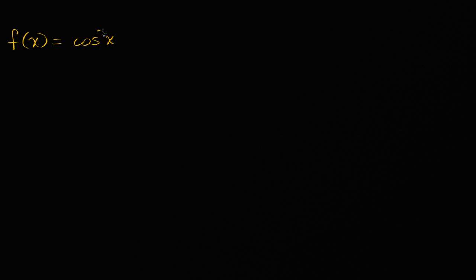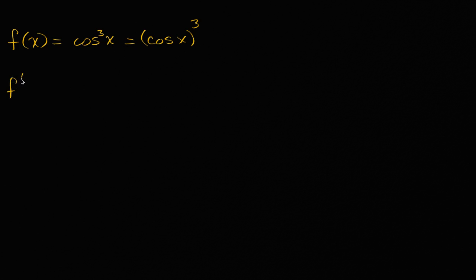Let's say we have the function f of x, which is equal to cosine of x to the third power, which we could also write like this: cosine of x to the third power. We are interested in figuring out what f prime of x is going to be equal to. The chain rule is going to be very useful here. I'm going to first apply the chain rule, and then dig into it a bit to draw the connection to what you might see in your calculus textbooks.